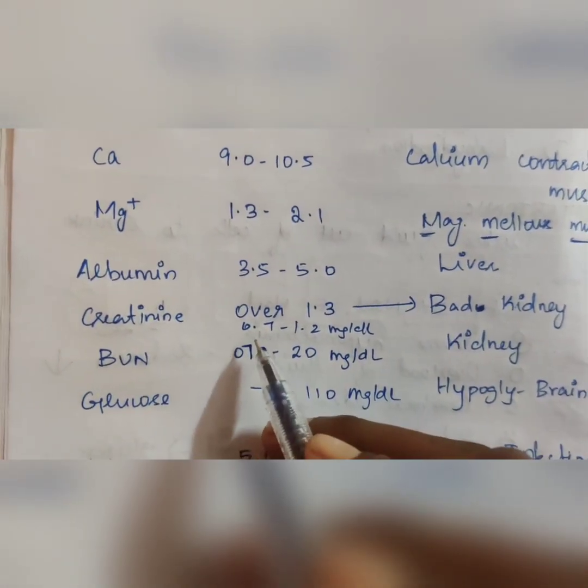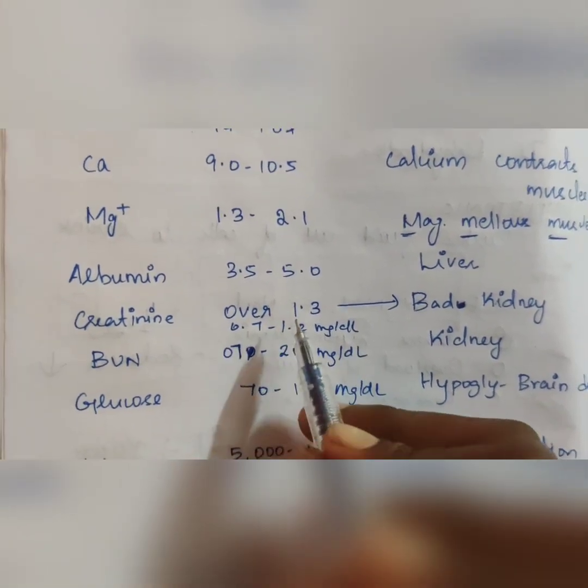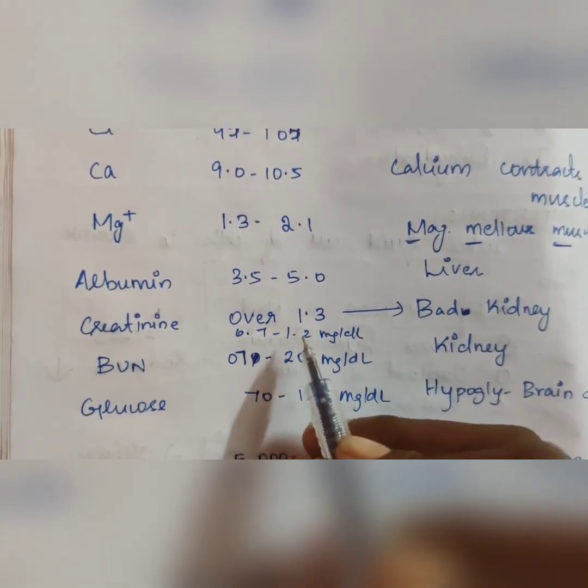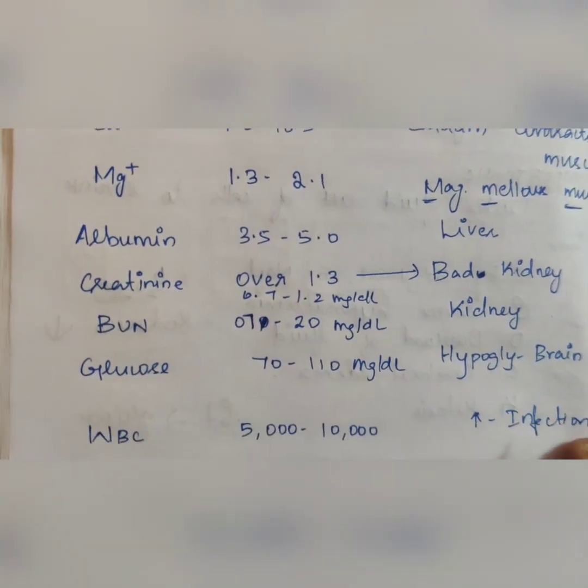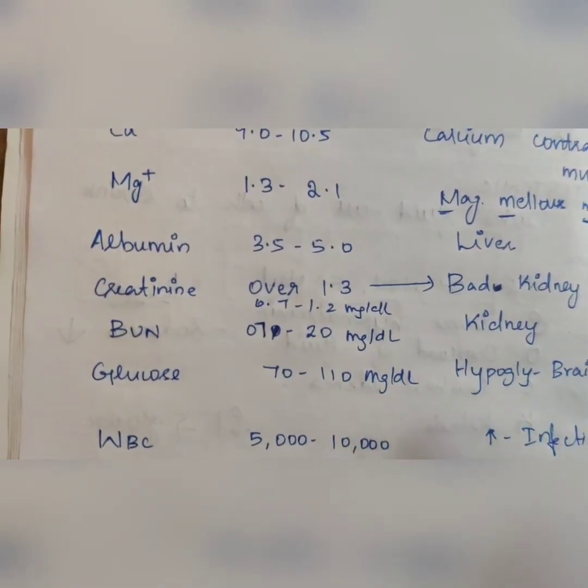Next, creatinine level, normal range of 0.7 to 1.2 mg per deciliter. In case over 1.3, it indicates bad kidney, any infection or inflammation of kidney or changes in kidney.